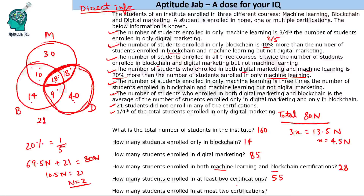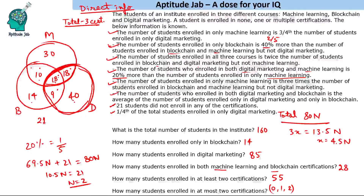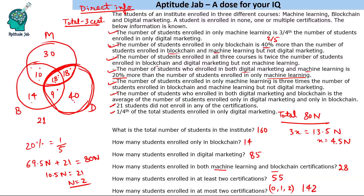How many students enrolled in at least two certifications? At least two means two or three certifications: 45 plus 10 equals 55. How many enrolled in at most two certifications? At most two means zero, one, or two certifications. Instead of counting all, subtract: total 160 minus 18 enrolled in all three equals 142. Remember to include zero-certification students in 'at most two'.